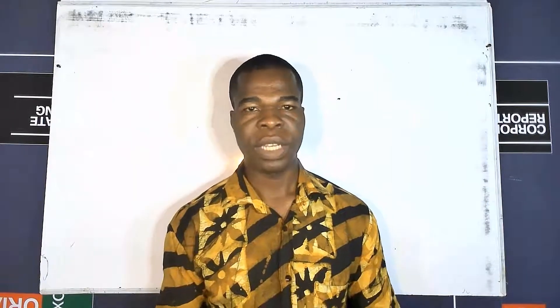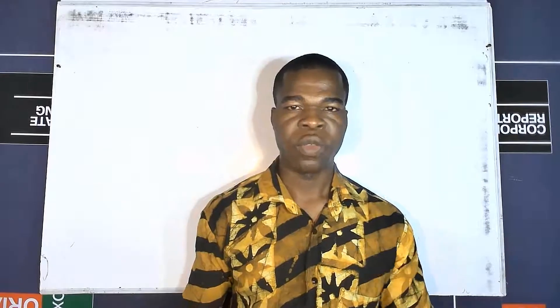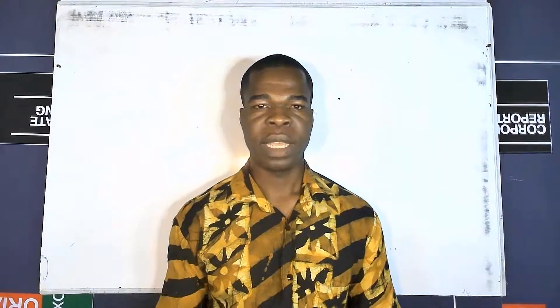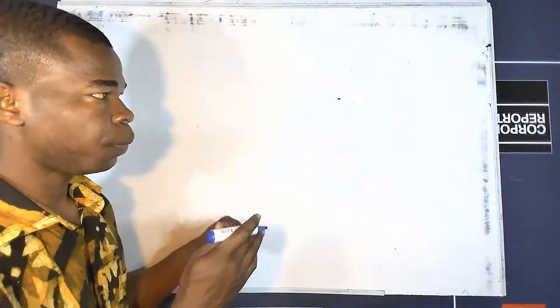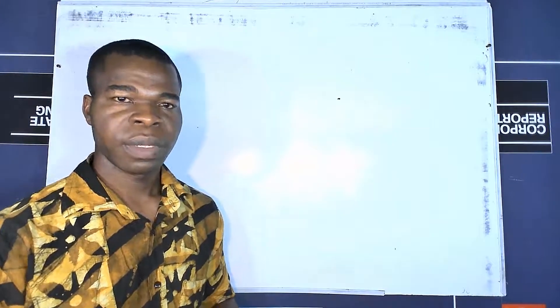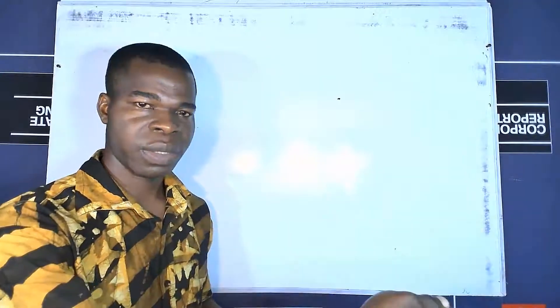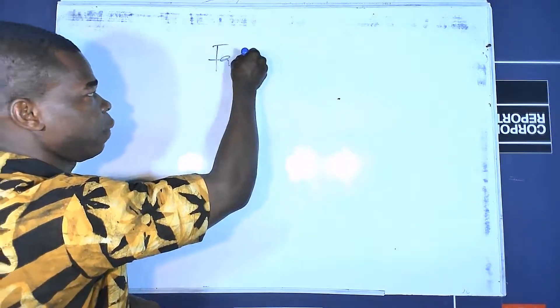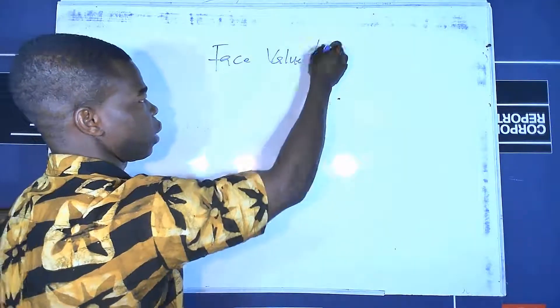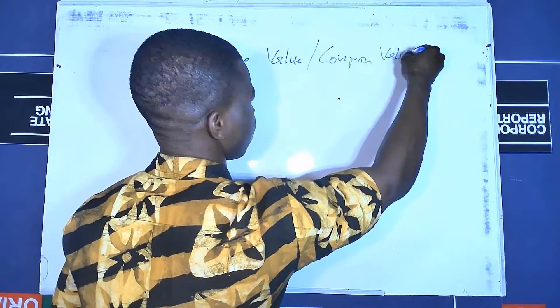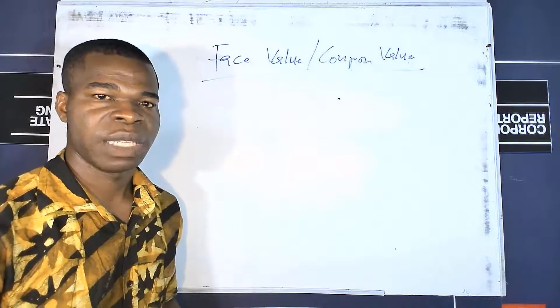Any time you are faced with questions that require you to prepare amortization schedules for such instruments, you can easily go about them. We will use one question to augment our understanding. But before then, let's look at the critical things you are supposed to look out for when it comes to amortization. The first thing is that any time a question is given to you, it comes with a coupon value or face value — the amount that the instrument is being issued at.